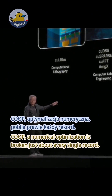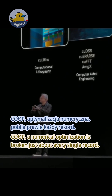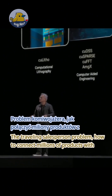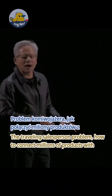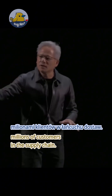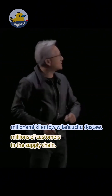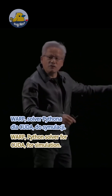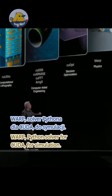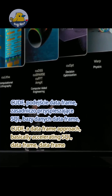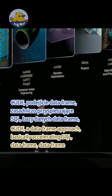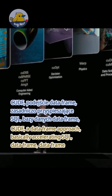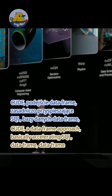Sparse solvers for CAE applications. cuOpt: numerical optimization has broken just about every single record — the traveling salesperson problem, how to connect millions of products with millions of customers in the supply chain.